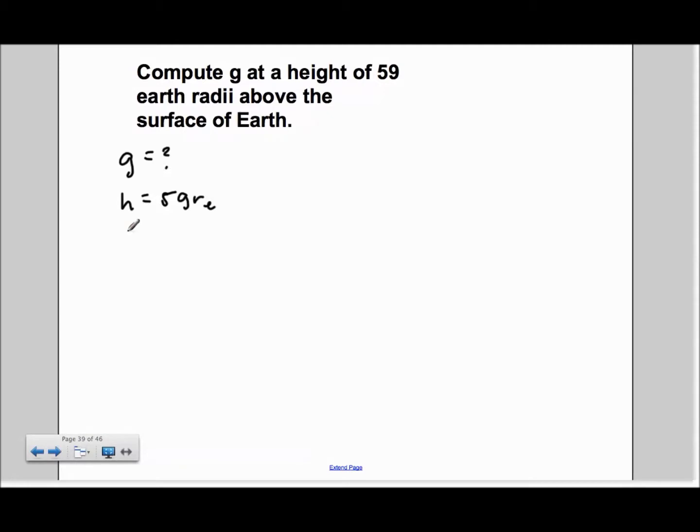We also know that the gravitational constant is 6.67 times 10 to the negative 11 newton meters squared per kilogram squared.